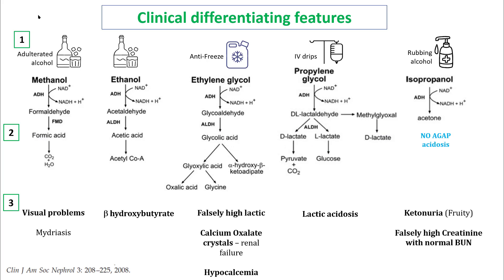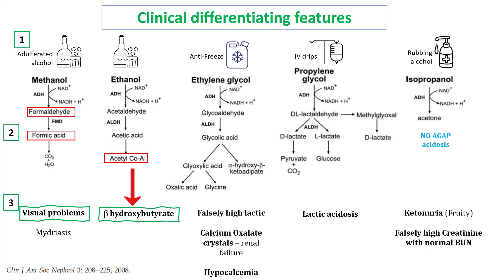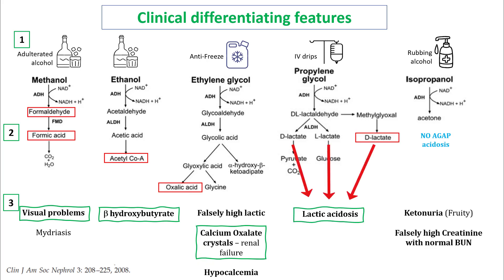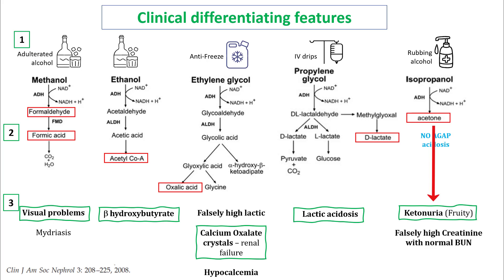Remembering the different clinical presentations of these alcohols is difficult, so let's put them together and look at their important clinical findings. In methanol, formaldehyde and formic acid affect vision, so these patients will have visual problems. In ethanol, there will be accumulation of acetyl-CoA, which will be converted into beta-hydroxybutyrate, which can be checked in the serum. Ethylene glycol results in oxalic acid, which forms calcium oxalate crystals, so examine the urine for crystalluria. Oxalic acid combines with calcium and can cause hypocalcemia as well. Propylene glycol is metabolized mostly into lactate, so this can result in lactic acidosis. Isopropanol is converted into acetone, so you can check for it by looking at urine ketones.